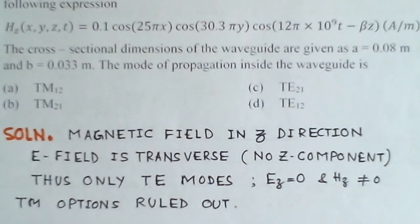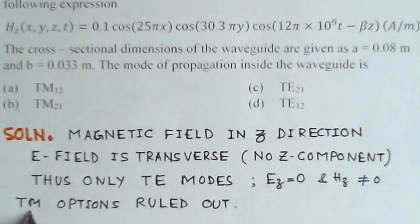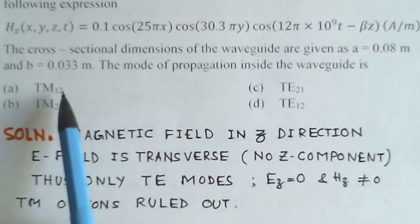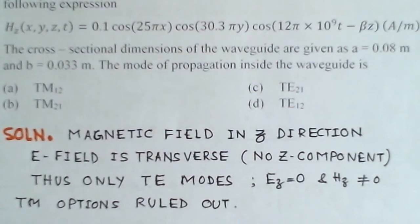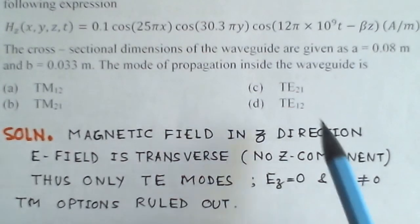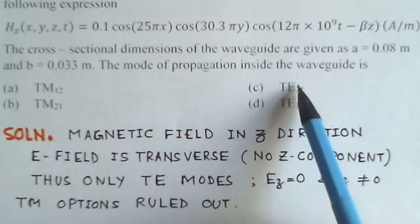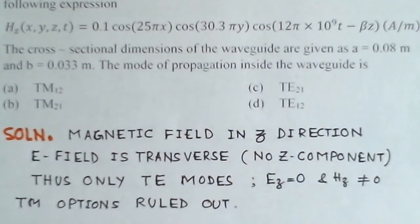This means the TM (transverse magnetic) mode option is ruled out. Options A and B are both TM modes, so they are eliminated. Only the TE (transverse electric) mode options remain.